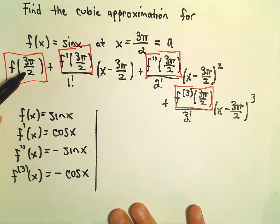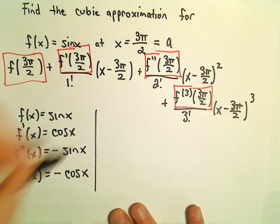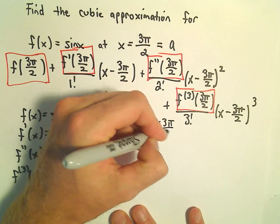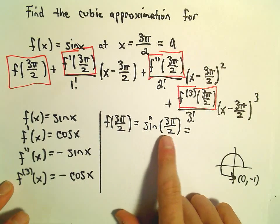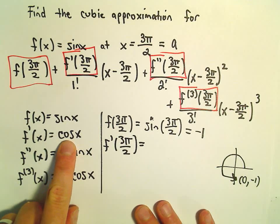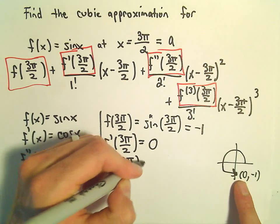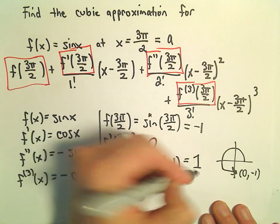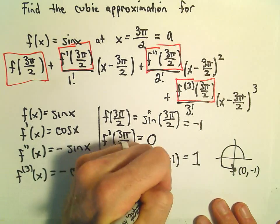Now I'm going to evaluate f(3π/2), f'(3π/2), f''(3π/2), and the third derivative of f at 3π/2. So f(3π/2) is sine of 3π/2. That puts us at the bottom of the circle at (0, -1). Sine of 3π/2 is going to be -1. Then we'll get cosine of 3π/2, which equals 0. f''(3π/2) is negative sine of 3π/2, which gives us positive 1. And the third derivative evaluated at 3π/2 is negative cosine of 3π/2, which again gives us 0.